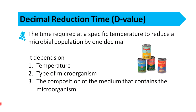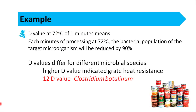D-value is the time required at a specific temperature to reduce a microbial population by one decimal. It depends on temperature, type of microorganism, and composition of the medium containing the microorganism. For example, a D-value at 72°C of one minute means that each minute of processing at 72°C, the bacterial population of the target microorganism will be reduced by 90%.